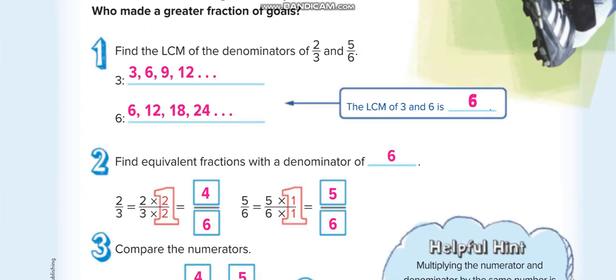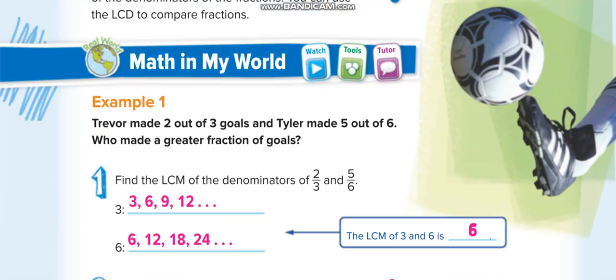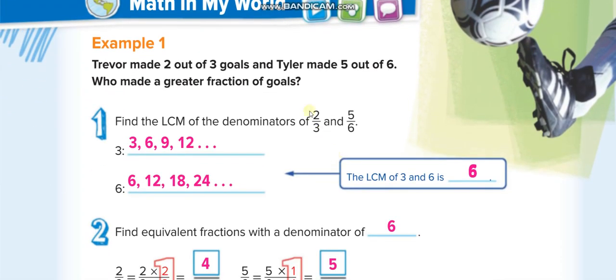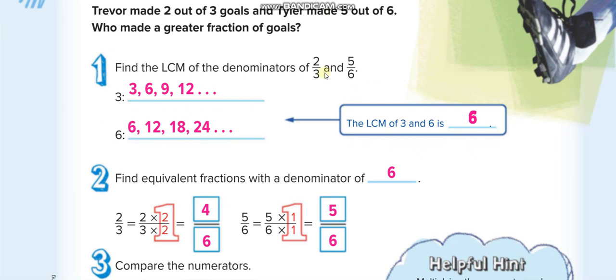In this lesson we are going to compare two fractions, like 2 over 3 and 5 over 6. Keep this in mind guys: we cannot compare fractions until we make the denominators the same. So how do we make them the same?